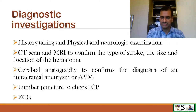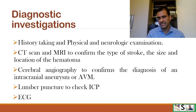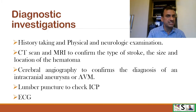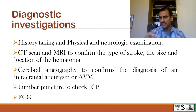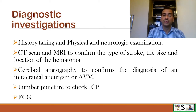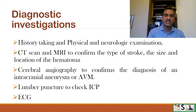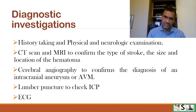What diagnostic investigations can be done? History, physical examination, and neurological examination provide initial clues. CT scan and MRI are used to confirm the type of stroke and the size and location of hematoma in hemorrhagic stroke. Cerebral angiography confirms the diagnosis of intracranial aneurysm or AVM. Lumbar puncture is done to check ICP, and ECG is also performed.